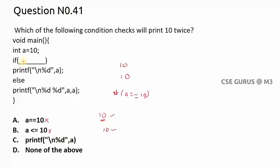Option C: if (printf("\n%d", a)). Here \n counts as 1, and %d with a=10 gives '10' which is two symbols — so 1 plus 2 equals 3 total. 3 is non-zero, so the condition is true. But remember: printf executes first and prints 10, then the condition is true, so it prints 10 again inside the block. You get 10 printed two times with this option.